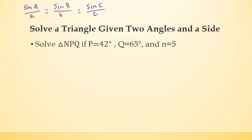Now, let's see what we're given here. This goes to example two on page 815 in the book. It says solve triangle NPQ if P is 42 degrees, Q is 65 degrees, and n is equal to 5. So it's always a good idea, let's sketch our triangle. It doesn't have to be drawn to scale. We're just trying to identify the parts. So let's say that this is N, this is P, and this is Q.